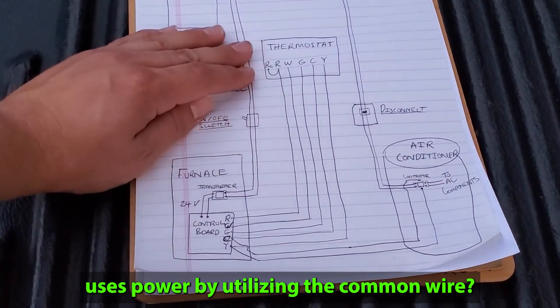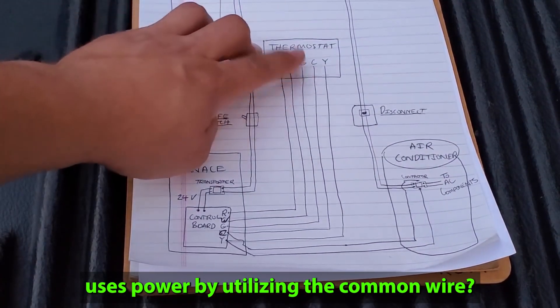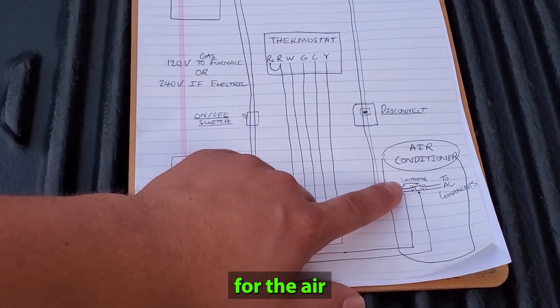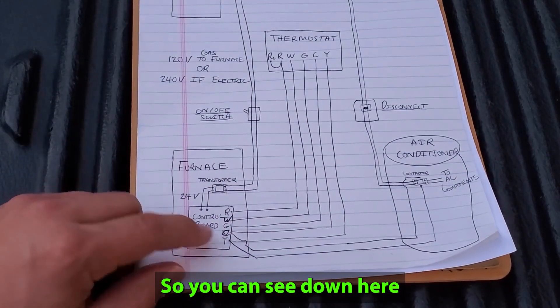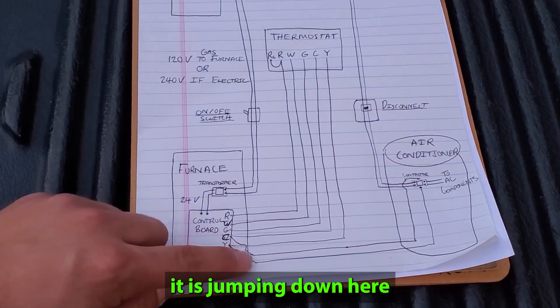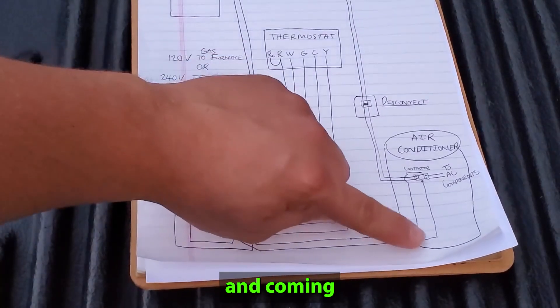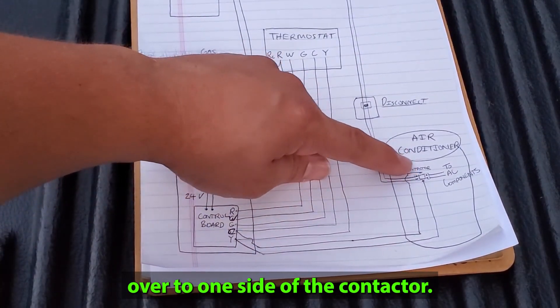Now remember how the thermostat uses power by utilizing the common wire? Well, the outside contactor for the air conditioner needs to do the same thing. So you can see down here with our common wire, it is jumping down here and coming over to one side of the contactor.